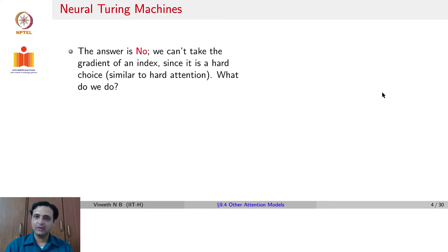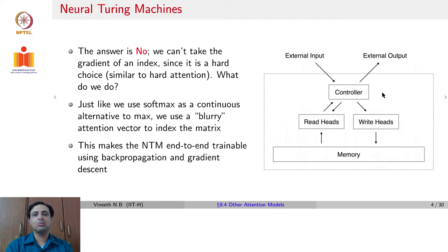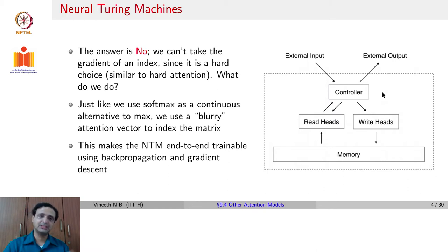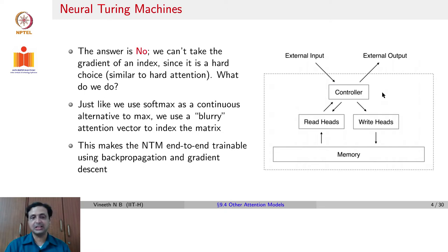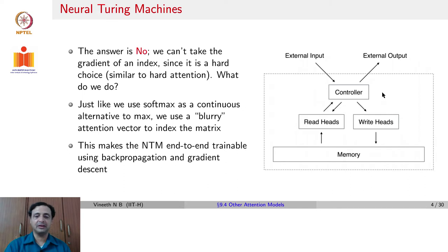Instead, what can we do? Very similar to what we talked about as soft attention, you could assume that you have a soft weighting function over different parts of a matrix. In an image it was called soft attention; here we are looking at the memory matrix which is R×C. We have a soft attention over all the locations in the memory, which can be used to read and write from the memory. This makes the Neural Turing Machine end-to-end trainable using backpropagation and gradient descent.